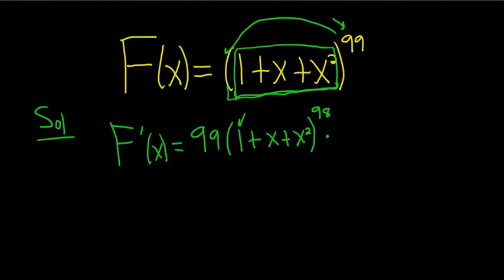So the derivative of 1 is 0, the derivative of x is 1, and then the derivative of x squared is 2x. And that's it. That's the answer.